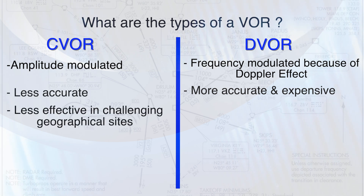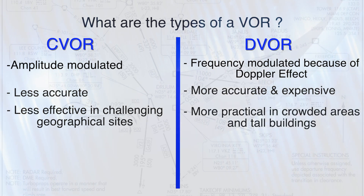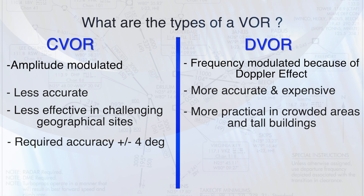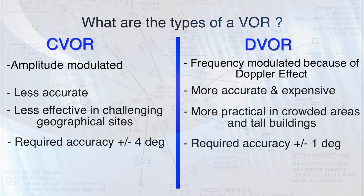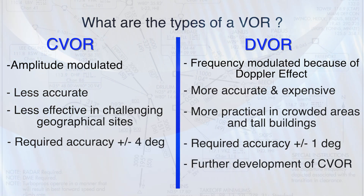The conventional VOR is also less effective in challenging geographical sites, whereas the Doppler VOR is more practical in crowded areas with tall buildings. The conventional required accuracy is plus or minus four degrees, whereas the Doppler is more accurate with a required accuracy of plus or minus one degree only.